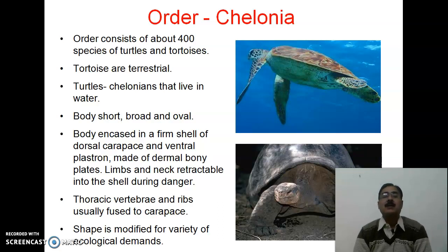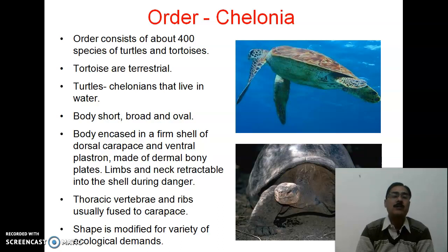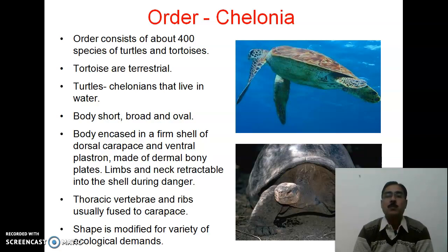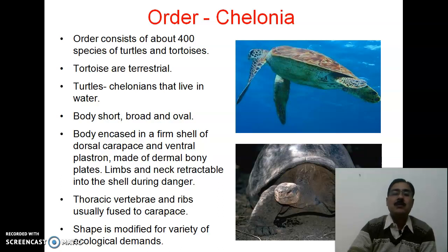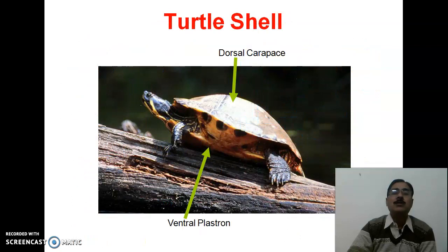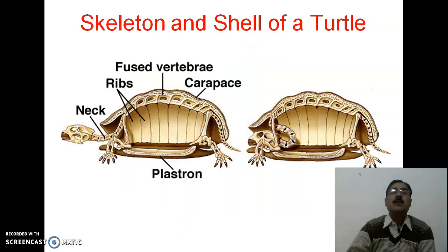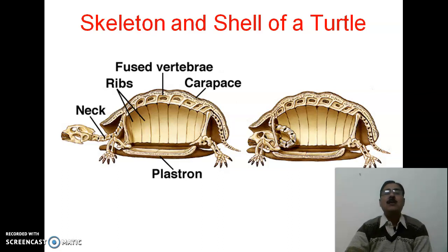Jab bhi inko koi khatra bhapte hain to apni gardan aur charon tangen andar wapas samet lete hain. (Whenever they sense danger, they retract their neck and all four legs back into the shell.) The thoracic vertebrae and ribs are usually fused to the carapace, and their shape is modified for a variety of ecological demands. Both shell positions are shown: in one the neck is outside the shell, and in the second the neck is retracted back into the shell.